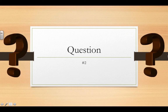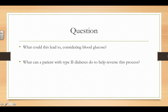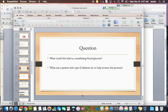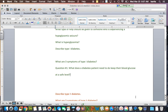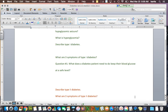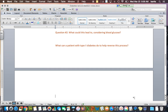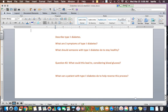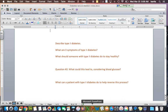Question number two is a two-part question. First, what could insulin resistance lead to considering blood glucose? Second, what can a patient with type 2 diabetes do to help reverse this process? Pause the video, look through your notes, and answer this question. The relevant section is highlighted in red on your skeleton notes.